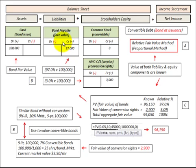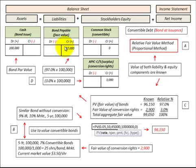Before we do that, we first have to value the debt and equity portions of those convertible bonds. We're going to use the relative or fair value method for doing that. We use this relative fair value method, or proportional method, when we have a known amount of debt and a known amount of equity on these convertible bonds. For our example, the known amount of debt is based on a similar bond without the conversion feature.